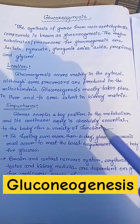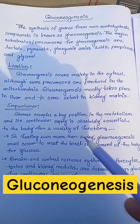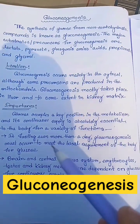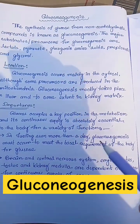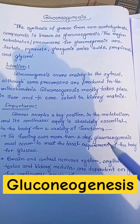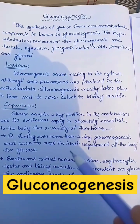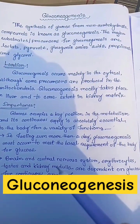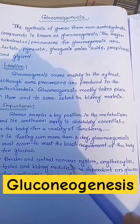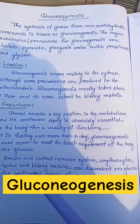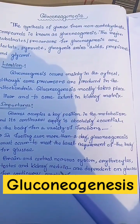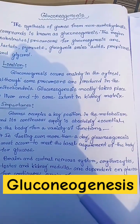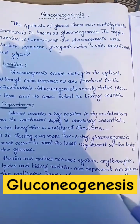Glucose occupies a key position in metabolism and its continuous supply is absolutely essential to the body. During fasting, even for more than a day, gluconeogenesis must occur to meet the basal requirement for glucose. The brain, central nervous system, erythrocytes, testis, and kidney medulla are all dependent on glucose for a continuous supply of energy.